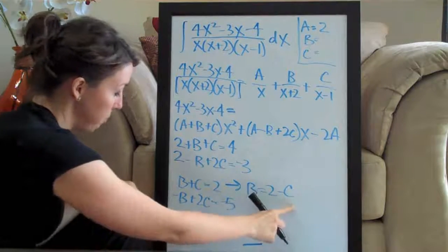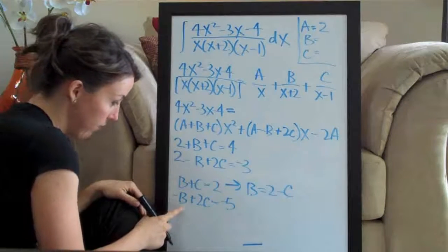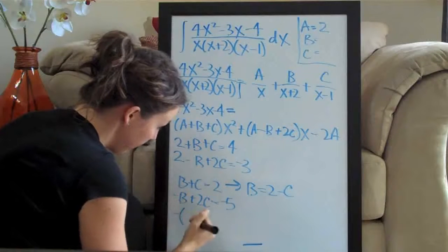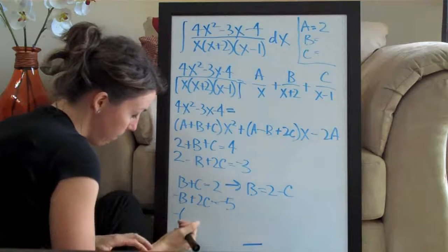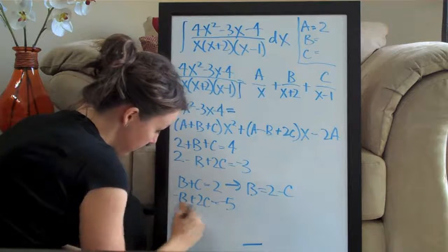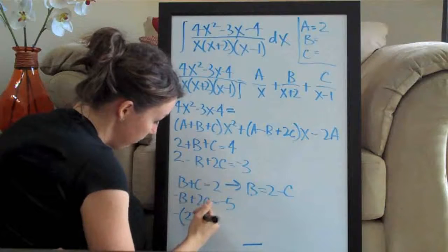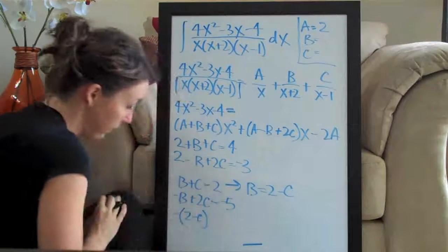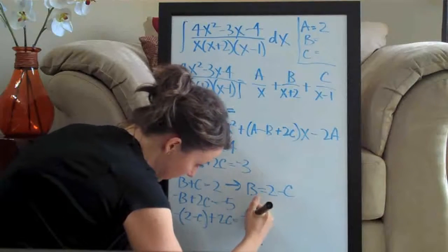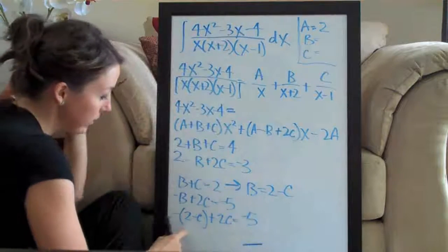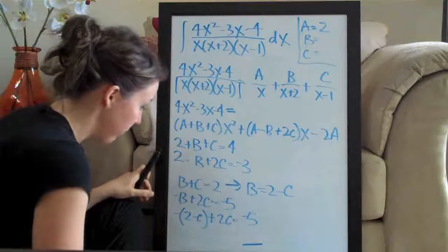So, now that I've found b, I'm going to go ahead and plug 2 minus c in for b down here. So, I'm going to get negative, and remember to put that negative out front and then put a parenthesis because this negative number needs to apply to both 2 and c here. So, 2 minus c gets plugged in for b and then plus 2c equals negative 5. So, now that we've done that, we can solve this equation for c and then we'll end up being able to solve again for b.